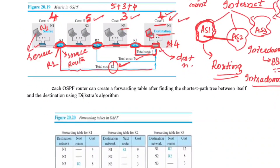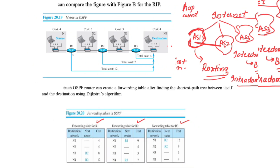The same logic is reflected in the forwarding tables for R1, R2, and R3. For R1's forwarding table, we list all networks N1, N2, N3, N4. R1 is directly connected to N1 and N2, so the next router is marked as dash. The cost to reach N1 is 4 and to reach N2 is 5.